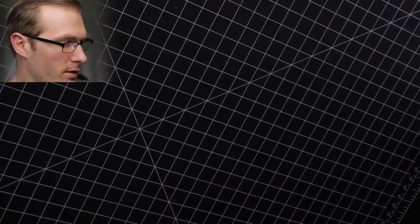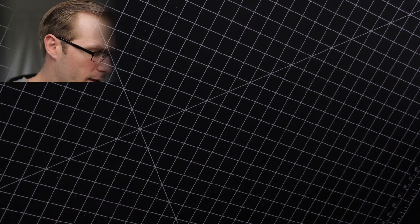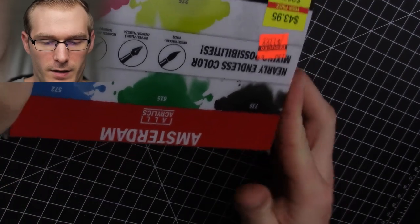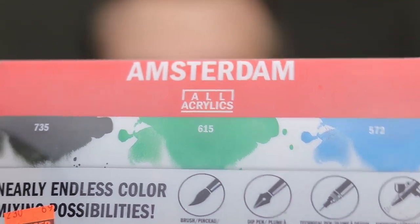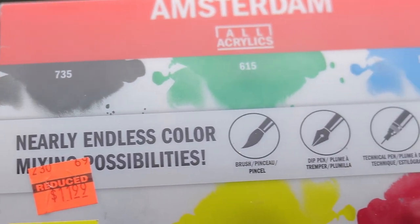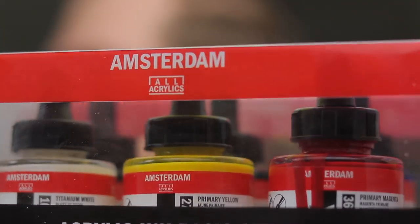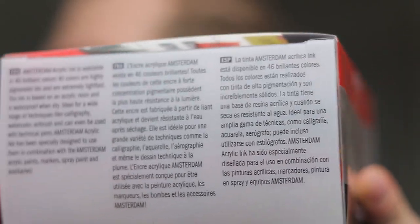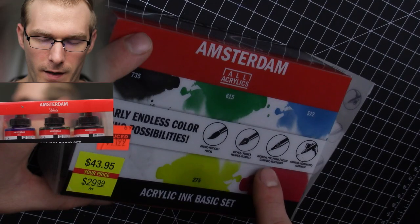And the next one that I have here which is the last art supply that I picked up which was on sale and I got it for a really good price would be these inks right here. And this is the Amsterdam acrylic inks and it is regularly forty-three ninety-five and it was on clearance for twenty-nine ninety-nine and then they had it reduced for eleven ninety-nine. So I got it for a really cheap price but this you can use it with a brush, a dip pen, technical pen, and an airbrush.